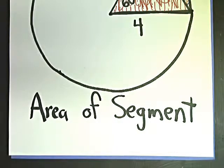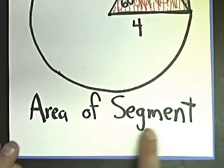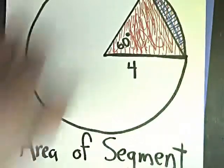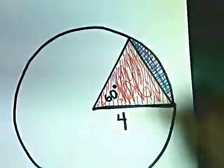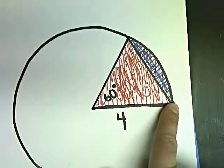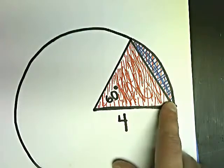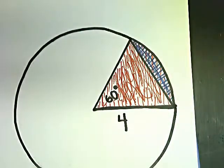Okay, here we are. This is the second problem in our area of segments section. We're doing the area of the segment, if you remember. The segment is this part here. It's the part that's created by the chord, which is a line that goes through a circle but not through the middle, and the outside of the circle. So it's this little blue area here.